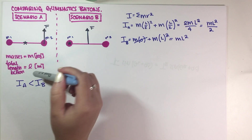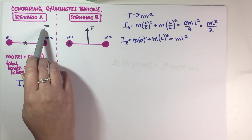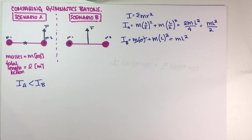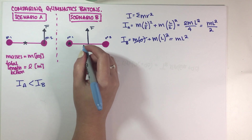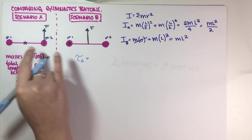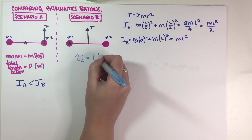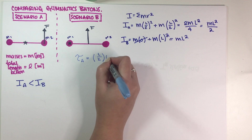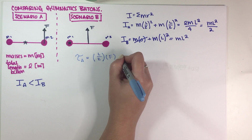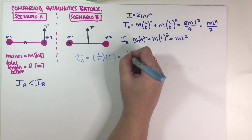The second part of our problem asks us to compare the torques. In both cases we have an axis of rotation and a force, so there is a torque. The equation for torque is R times F times sine of 90 degrees. For torque A, R is equal to half the length L/2, and F is just F. Sine of 90 degrees equals 1, so torque A equals LF divided by 2.